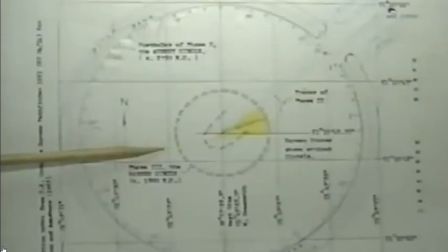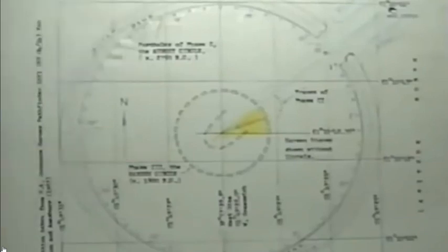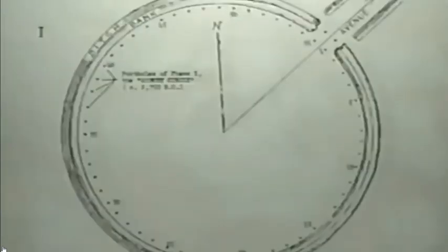The stonework at Stonehenge is what archaeologists call the phase 3 construction. It dates to 1,750 years before Christ. The first phase, dating 1,000 years earlier, was a simple circular earthworks with a diameter of roughly 228 feet. It looks rather blank without the stones, doesn't it?